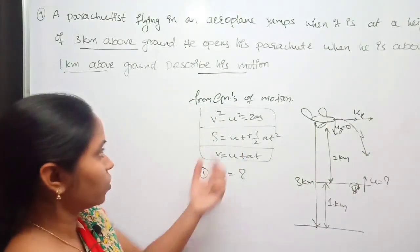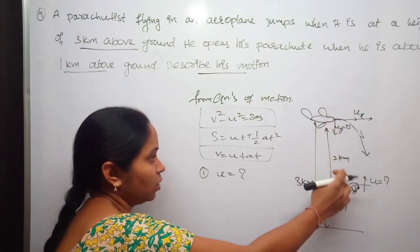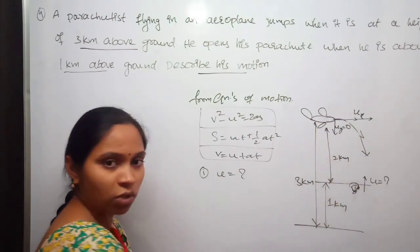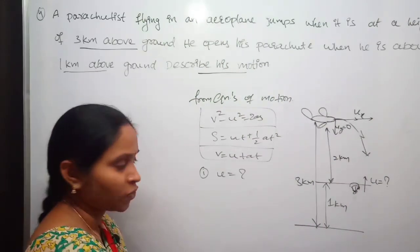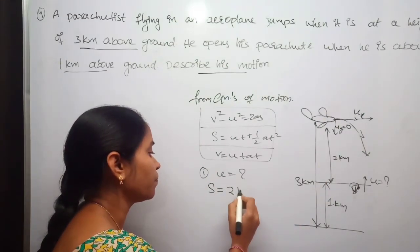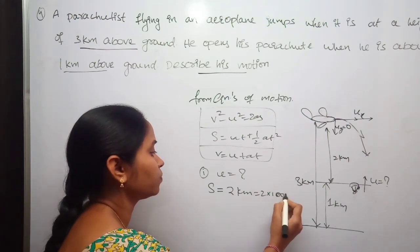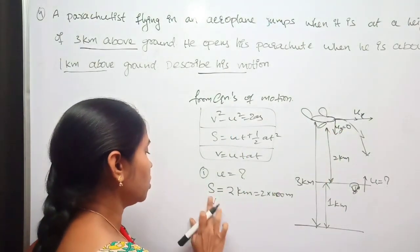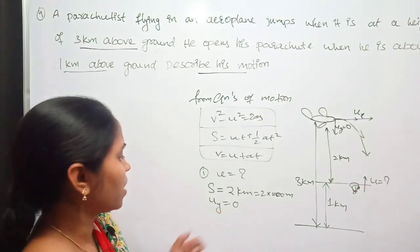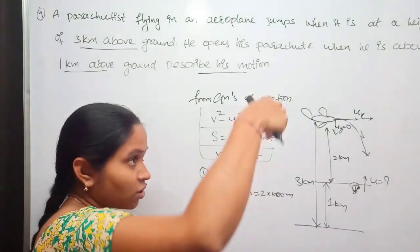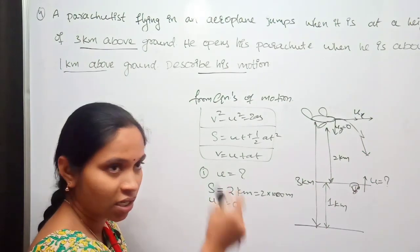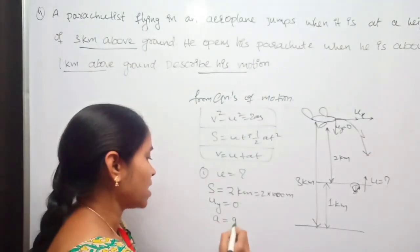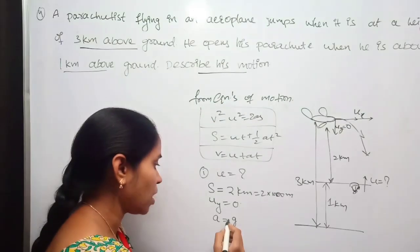I am going to use the equation v² − u² = 2as because we know the displacement traveled by the parachutist. Three minus one kilometer is two kilometers — it traveled two kilometers before opening his parachute. So the displacement s = 2 km = 2000 meters. The initial vertical velocity u_y = 0, because the motion is along the vertical direction. The acceleration is equal to the acceleration due to gravity, approximately 10 m/s².